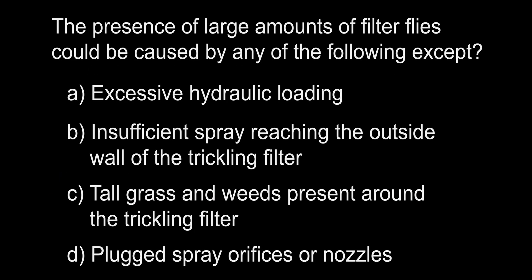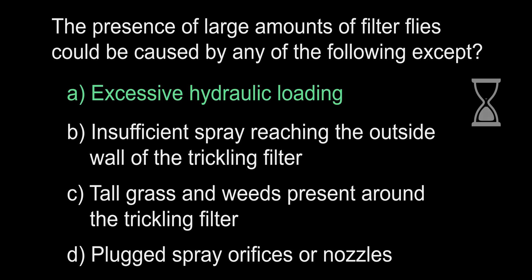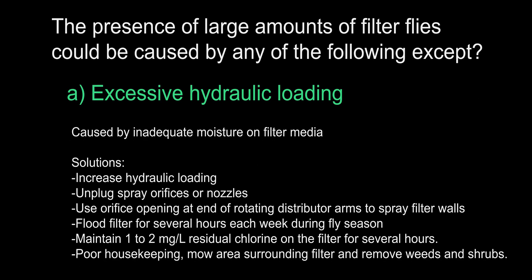The presence of large amounts of filter flies could be caused by any of the following except: A. Excessive hydraulic loading. B. Insufficient spray reaching the outside wall of the trickling filter. C. Tall grass and weeds present around the trickling filter. D. Plugged spray orifices or nozzles. The answer is A, excessive hydraulic loading. Filter flies prefer when water is not moving on top of a trickling filter or when vegetation has built up around it, as this creates good habitat for them. Keeping water flowing on a trickling filter will prevent them from propagating. Our answer is actually one of the troubleshooting solutions to prevent or remove filter flies.